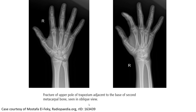This is an example of a fracture of the ridge of the trapezoid adjacent to the base of the second metacarpal bone, seen clearly in the oblique view.